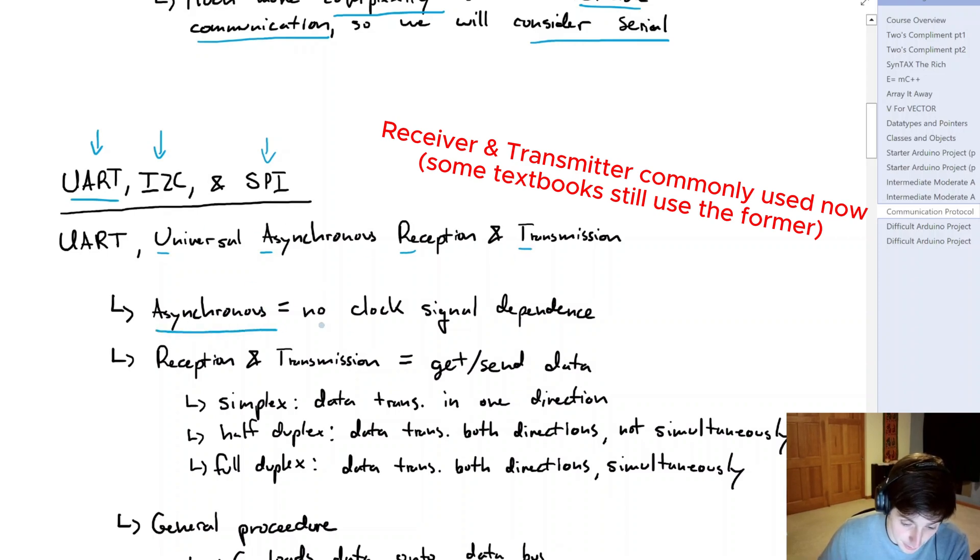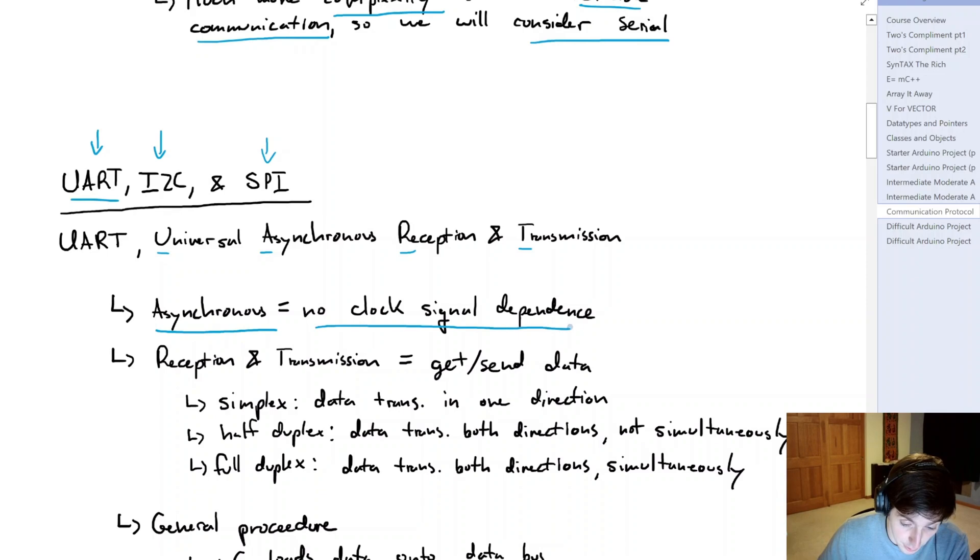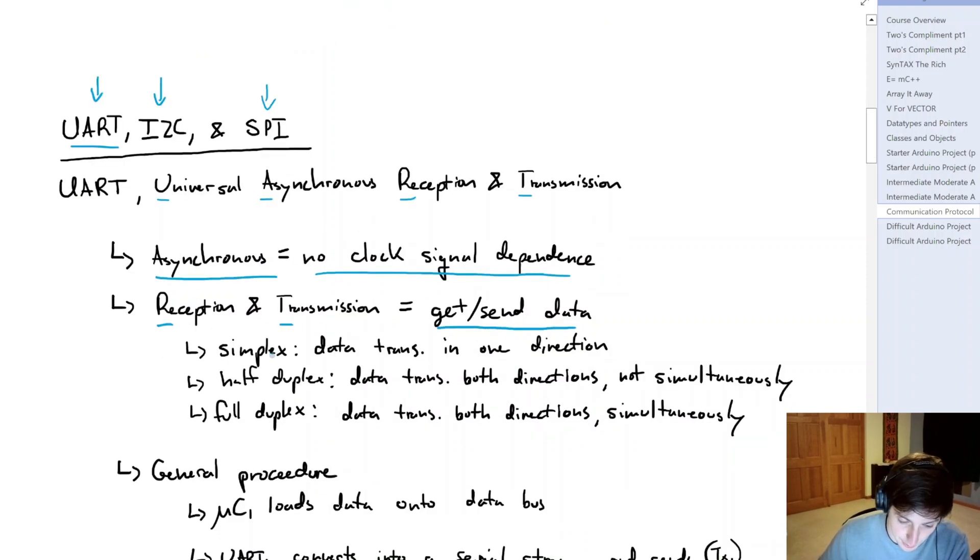Asynchronous means that you have no clock signal dependence for the reception and transmission. So we can get and send data. And there's a few ways that we can do that. We can have simplex, which is data transmitted in one direction. We can have half duplex, so data can transmit in both directions, but not at the same time. And then lastly, we can have full duplex, so data transmits in both directions and it can happen at the same time.